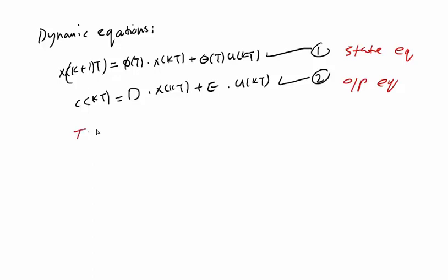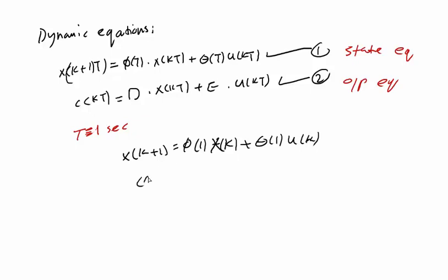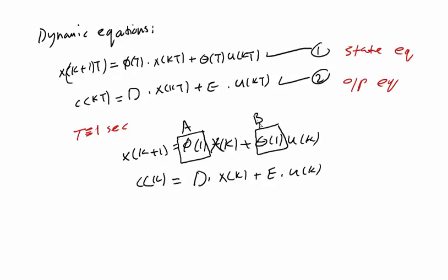If T equals one second, for example, this becomes X(k+1) equal to Φ(1) times X(k) plus Θ(1) times U(k), and C(k) equal to D times X(k) plus E times U(k). For T equal to one second, you can write it in this formal way. Sometimes you find Φ written as a matrix, and Θ written as the B matrix or B vector, especially for a one-dimensional or single-input case.